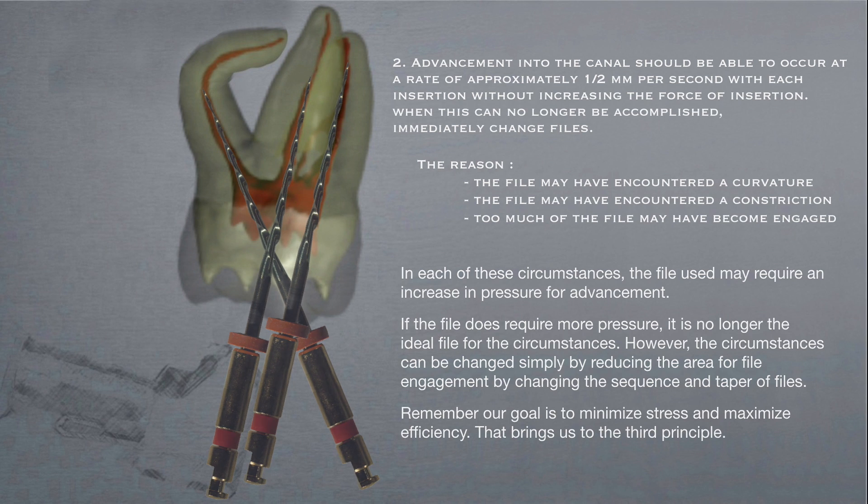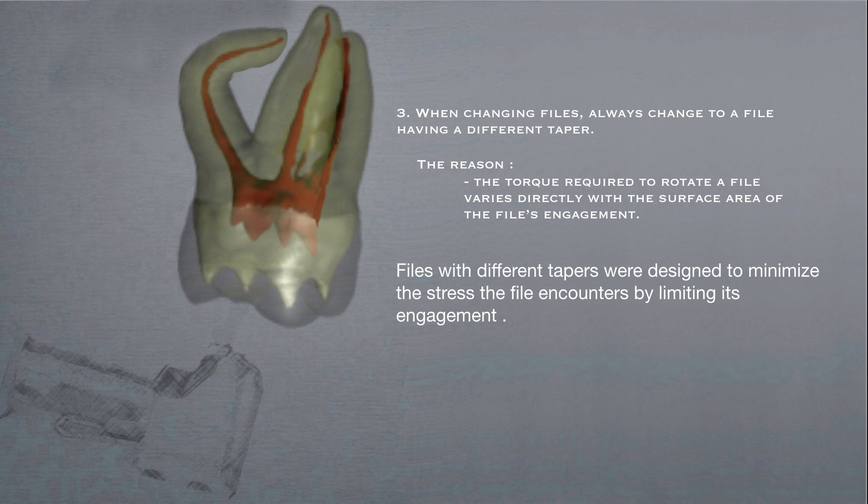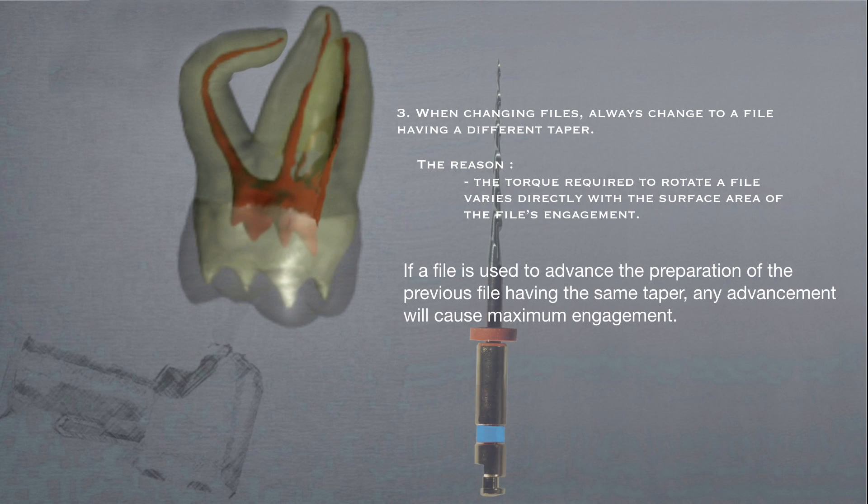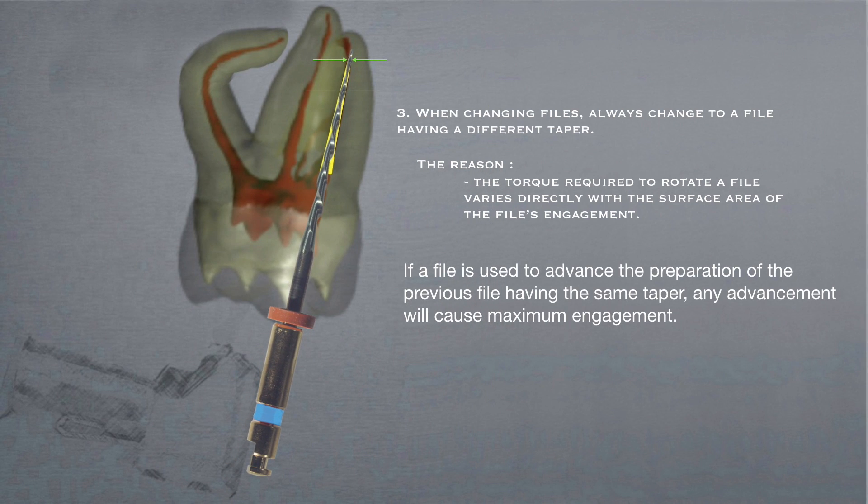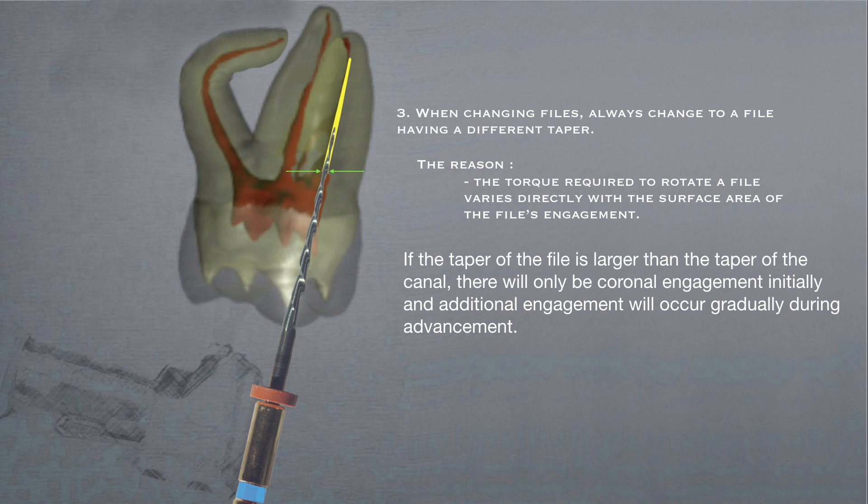And that brings us to the third principle. When changing files, always change to a file having a different taper. The reason? The torque required to rotate a file varies directly with the surface area of the file's engagement. Files with different tapers were designed to minimize the stress the file encounters by limiting its engagement. If a file is used to advance the preparation of the previous file having the same taper, any advancement will cause maximum engagement. If the taper of a file is larger than the taper of the canal, there will only be coronal engagement initially, and additional engagement will occur gradually during advancement.